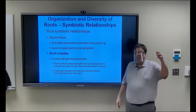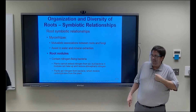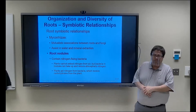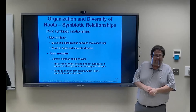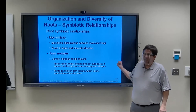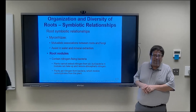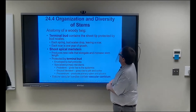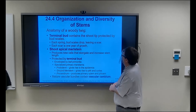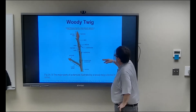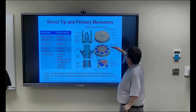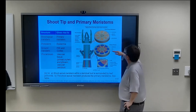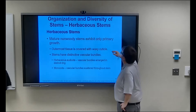Mycorrhizal associations — fungi and roots working together to aid in water and mineral extraction. Root nodules in beans do nitrogen fixation, and this is really the only way we can get nitrogen out of the atmosphere. Our atmosphere is 80% nitrogen but plants can't take it in directly — it has to be converted into nitrates by nitrogen-fixing bacteria that can be absorbed in the root. If you wanted to really disrupt agriculture, knock out the nitrogen-fixing bacteria.